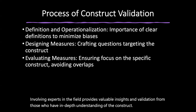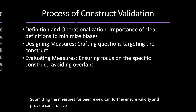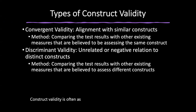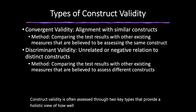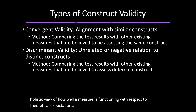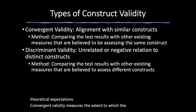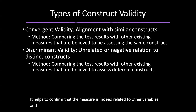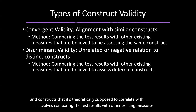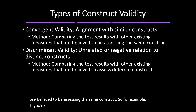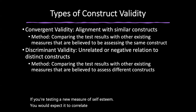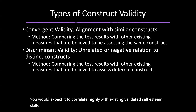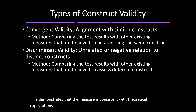Construct validity is often assessed through two key types. Convergent validity measures the extent to which the assessment aligns with other measures of similar constructs, confirming that the measure is related to variables it theoretically should correlate with. This involves comparing test results with existing validated measures of the same construct. For example, a new measure of self-esteem would be expected to correlate highly with existing validated self-esteem scales, demonstrating consistency with theoretical expectations.